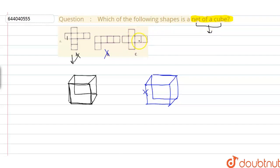we are getting a cube and a cube is having six faces and this is also having six faces. So this is the desired net for a cube.